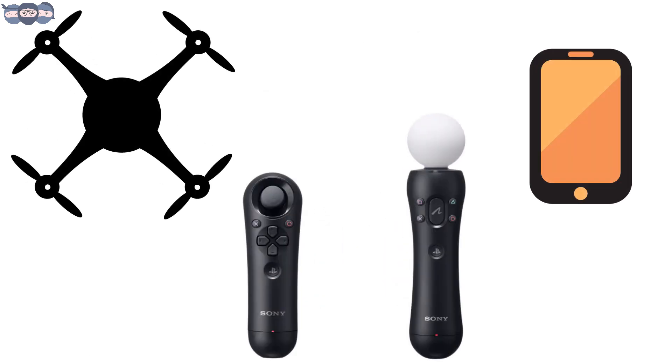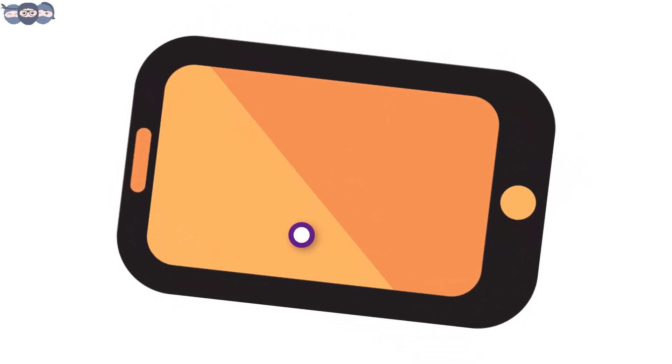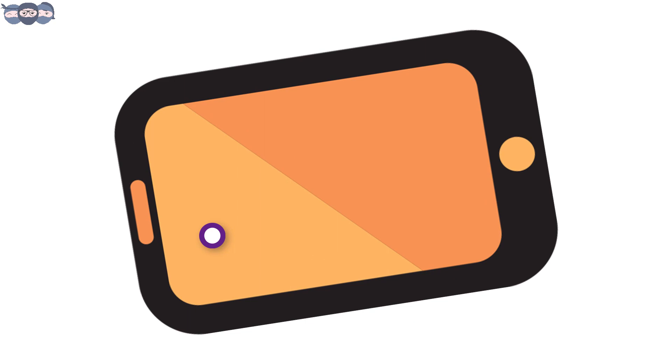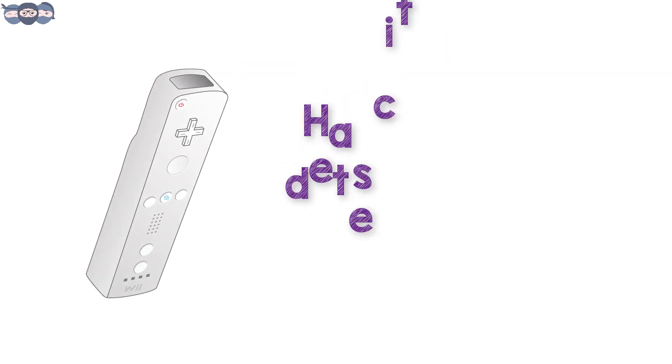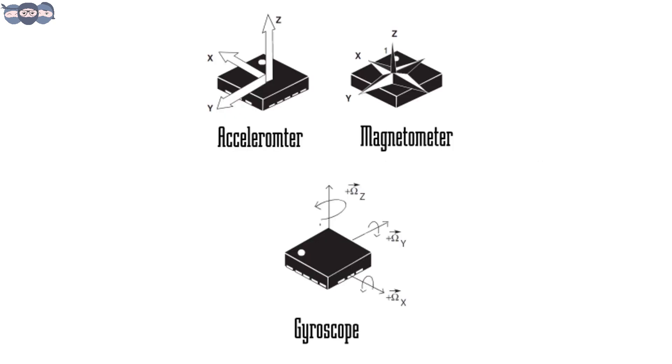We find a lot of appliances having motion control built into them. To give a few examples, many of us play games on our smartphones. By tilting or rotating the phone, a certain character can be controlled. Similarly, the controller of Nintendo Wii works using motion control technology.